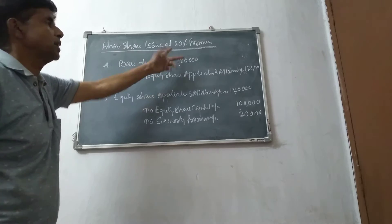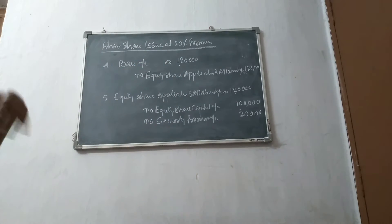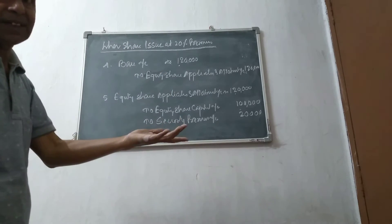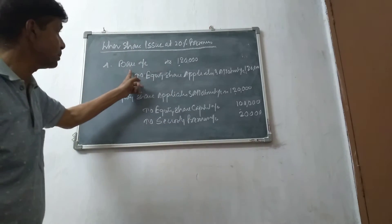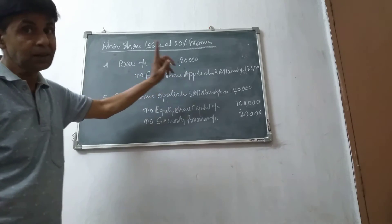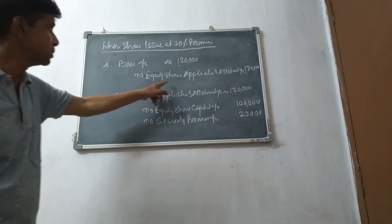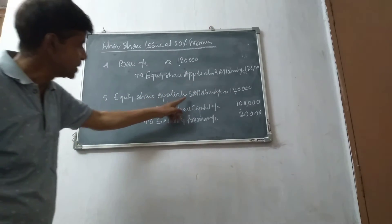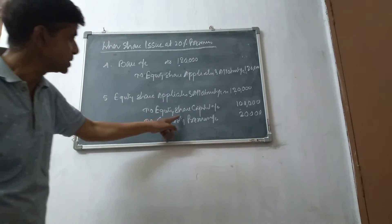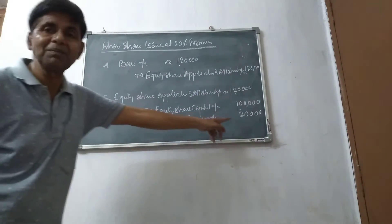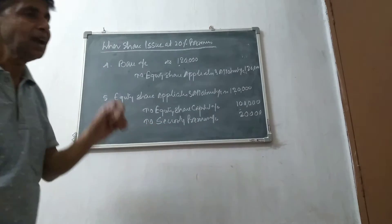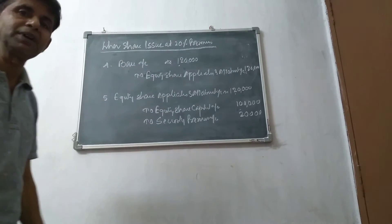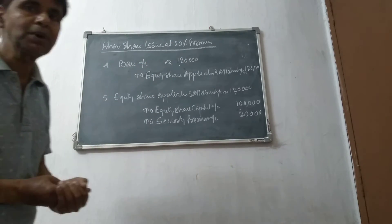Next, when shares are issued at 20% premium: the premium amount is extra. So the share value of rupees 10 becomes rupees 12. 10,000 shares into rupees 12 — so bank account receives 1,20,000. Equity Share Application and Allotment Account is 1,20,000. Share capital account is 1,00,000 and security premium is 20,000. How much is the share value? 10,000 into 10 is 1,00,000 and 20% premium is 2,000 per share.